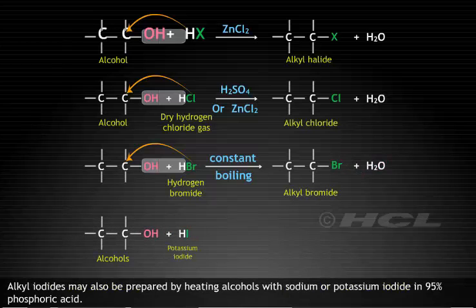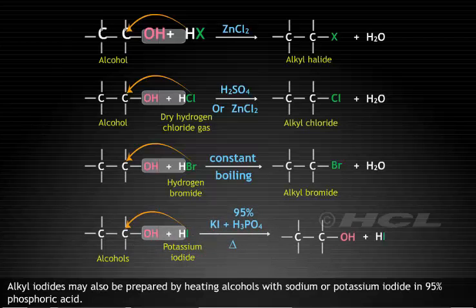Alkyl iodides may also be prepared by heating alcohols with sodium or potassium iodide in 95% phosphoric acid.